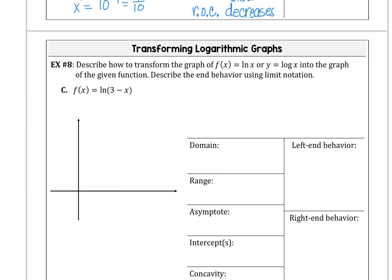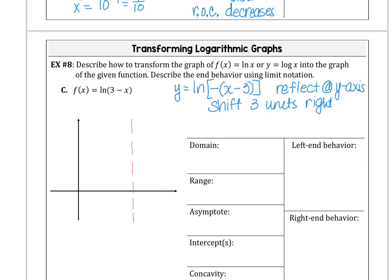And then part c is just like we looked at in 7c, where the easiest thing is to rewrite the function as natural log, pull the negative out, x minus 3. And that helps you to see you got a reflection with the negative in front of the parentheses. And that reflection is around the y-axis. And then you have the shift that's three units right for x minus 3. So rewriting the function helps you to get a good handle on the transformations.